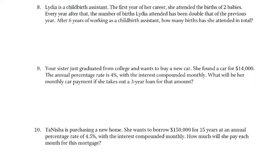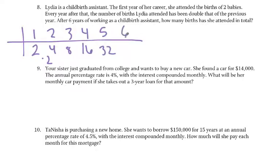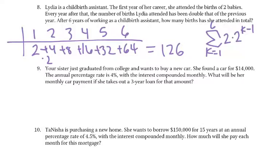Lydia is a childbirth assistant. The first year of her career, she attended the birth of two babies. Every year after that, the number of births Lydia attended has been double that of the previous year. So first year, two, and she's doubling it. Second year, four, third year, eight, fourth year, sixteen, fifth year, thirty-two, and sixth year, sixty-four. So we would add those all together to get our answer. Two plus four plus eight plus sixteen plus thirty-two plus sixty-four, and we'd get a hundred and twenty-six births. If we wanted to use the summation, that one wasn't too bad, was it? We started at one, we went to six years, we started at two babies, and they doubled every year.